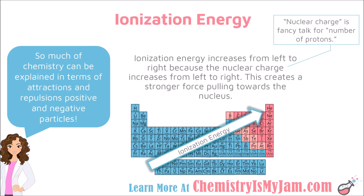Let's look at what causes this trend. As you go from left to right across the periodic table, each element adds a proton to its nucleus — a positively charged particle. By having more protons, elements on the right-hand side are able to hold on tighter to their electrons, requiring more ionization energy to remove them. The protons in the nucleus are referred to as the nuclear charge, which is just a way of describing the number of protons within the nucleus.